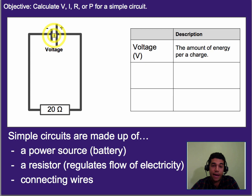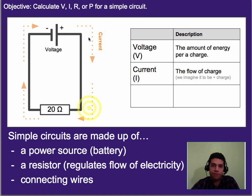So voltage, supplied by the battery in this case, is how much energy each charge gets as it moves through this circuit. Current is how fast that charge is flowing through this circuit, or the amount of charge per second.